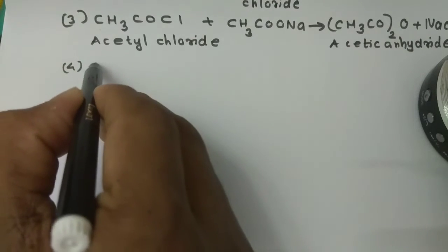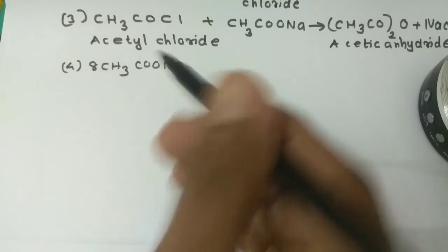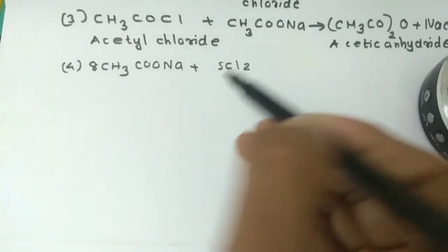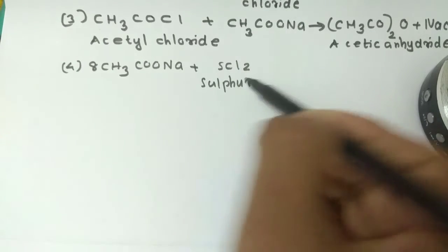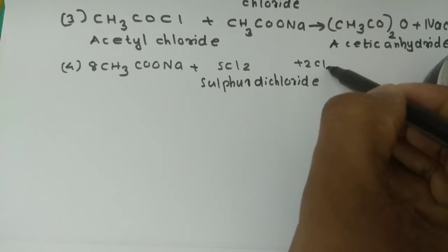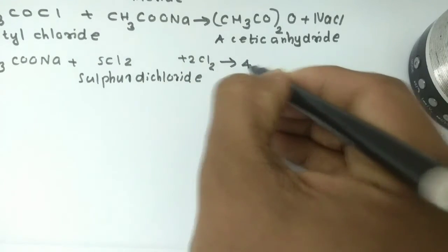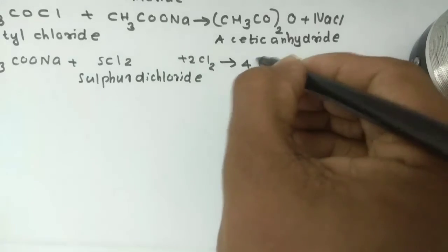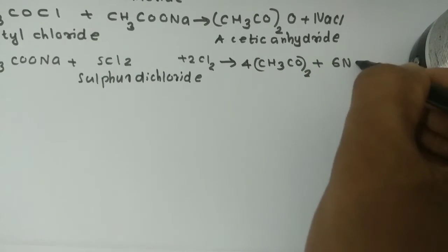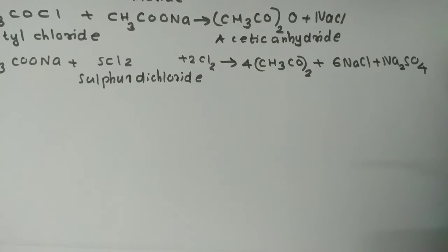This is the method of preparation. The reaction gives 4×CH₃CO₂ plus 6NaCl plus Na₂SO₄ — this is how we form Acetic Anhydride using this method.